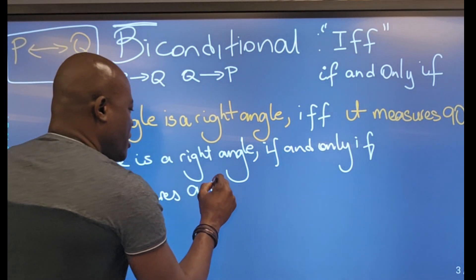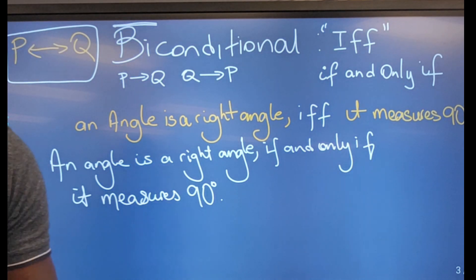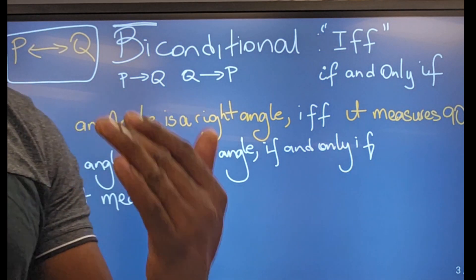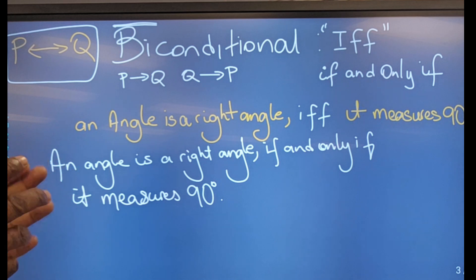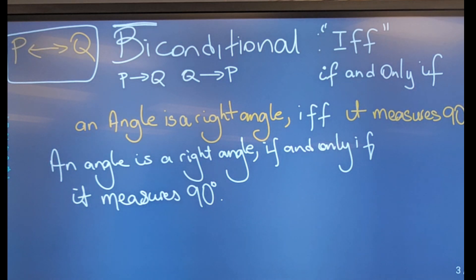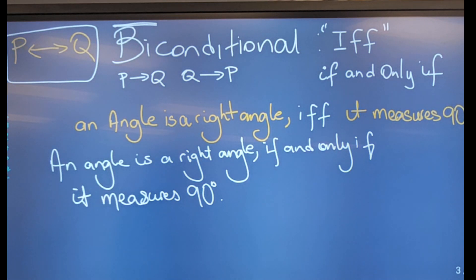So our biconditional statement reads: 'An angle is a right angle if and only if it measures 90 degrees.' We remove the 'if' from the conditional and replace 'then' with 'if and only if.' The biconditional is what we use to formulate definitions.